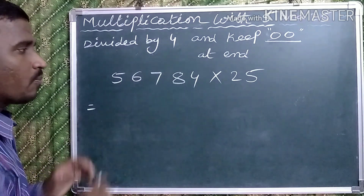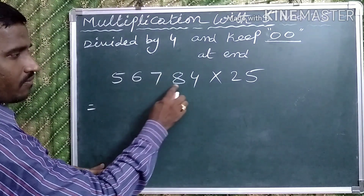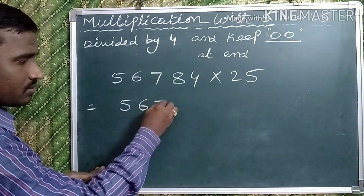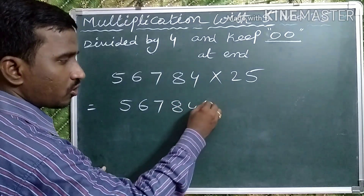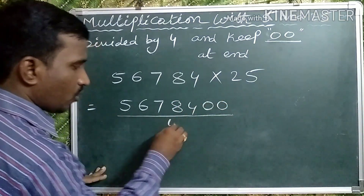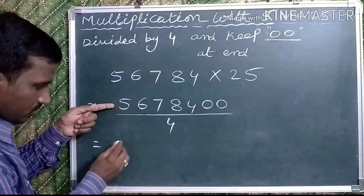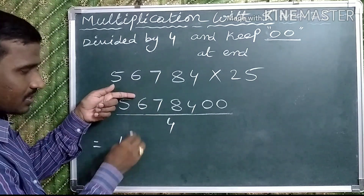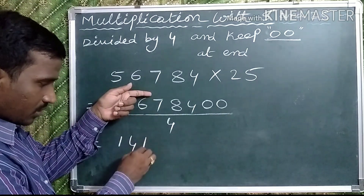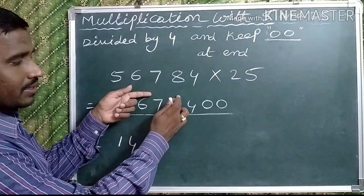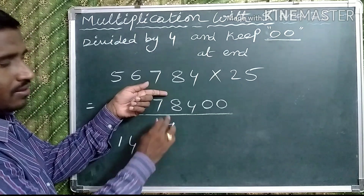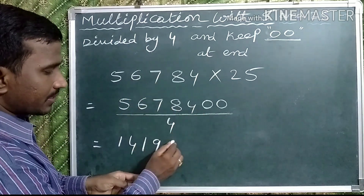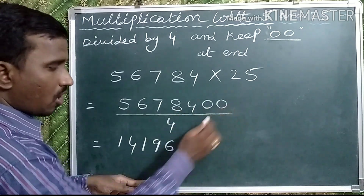Observe one more example: 56784 multiplied by 25. Keep 2 zeros at the end — 5678400 — divided by 4. 4 ones are 4; remainder 1, then 16; 4 fours are 16; 4 fours are 16; 4 ones are 4; remainder 3, then 38; 4 nines are 36; remainder 2, then 24; 6 fours are 24. Last 2 zeros. Answer: 1419600.